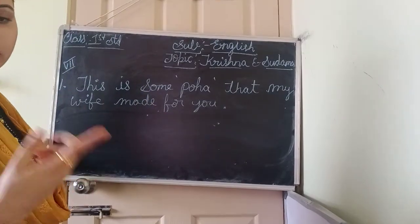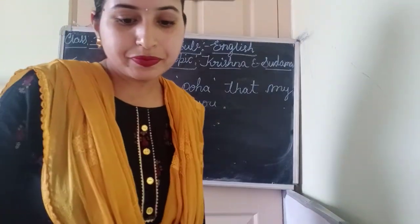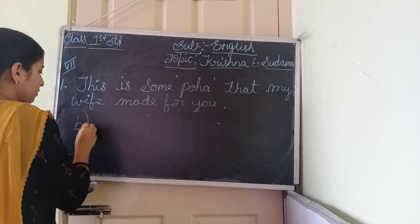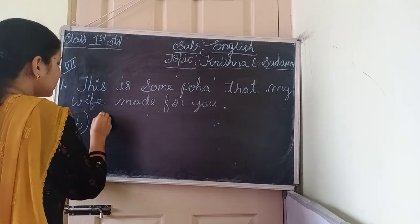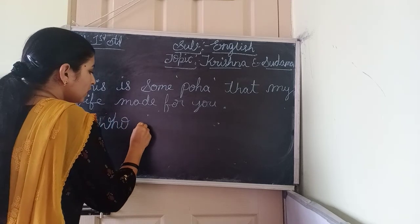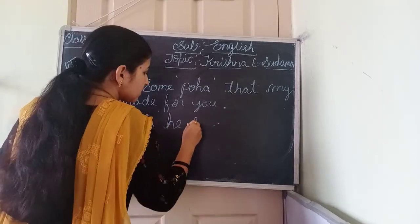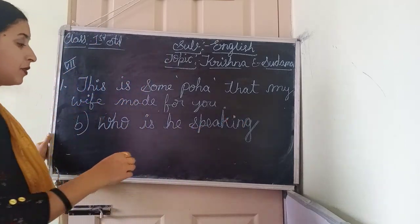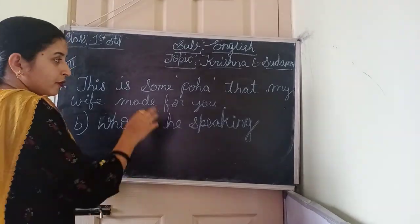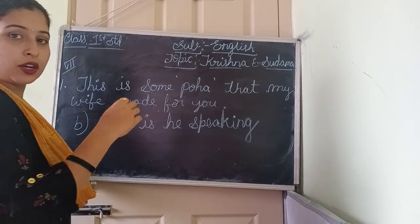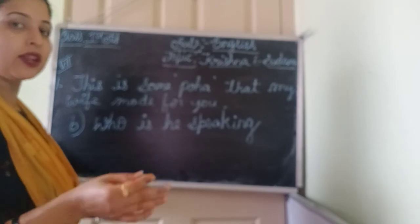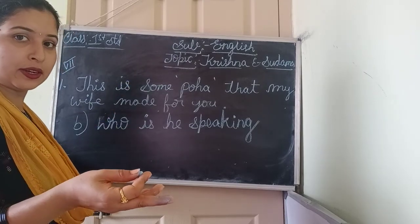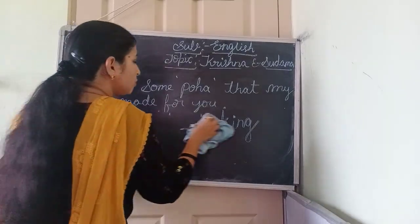One more question: who is he speaking to? To whom did he say this statement? We already know this statement was told by Sudama. Who is the speaker? Sudama is the speaker. To whom did he say it? We can write: 'To whom he said it.' Second one — I think you have written: 'He said to whom?'